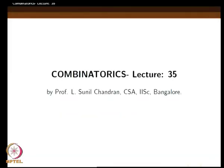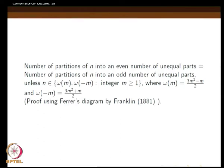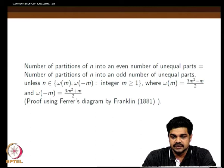Welcome to the thirty-fifth lecture of combinatorics. In the last class, we were discussing partitions of integers, specifically partitions of n where each part is different — no repetition, unequal parts. We had seen that the number of such partitions with distinct parts is equal to the number of partitions of n where each part is an odd number.